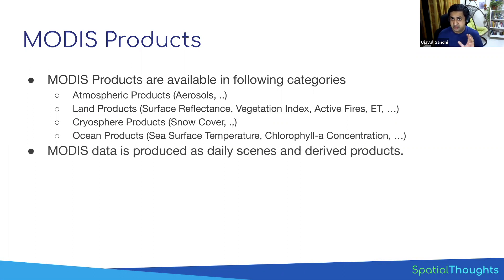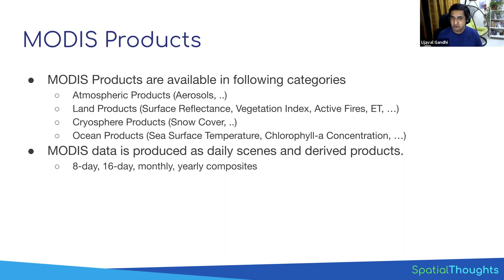MODIS data is typically produced as composited products over a time range — most products come as an 8-day composite or a 16-day composite. The reason for this is that because it's daily data, you may have a lot of clouds. Rather than doing the compositing yourself, you can get an 8-day composite where each pixel is the best pixel over the 8-day range. The MODIS algorithm selects the most cloud-free pixel, so you don't have to worry about clouds as much compared to working with daily data.